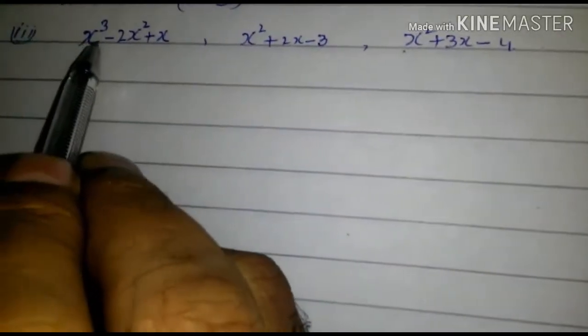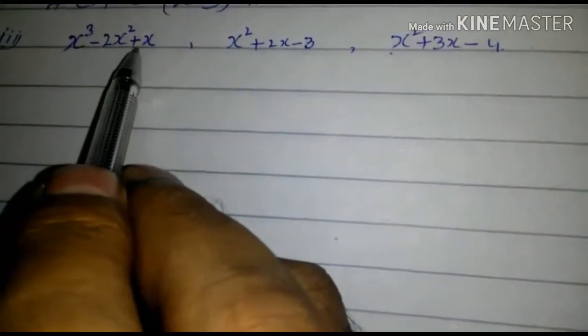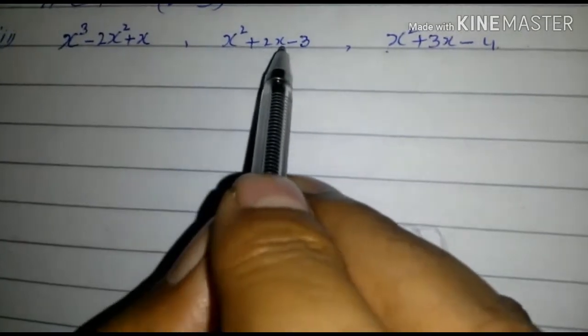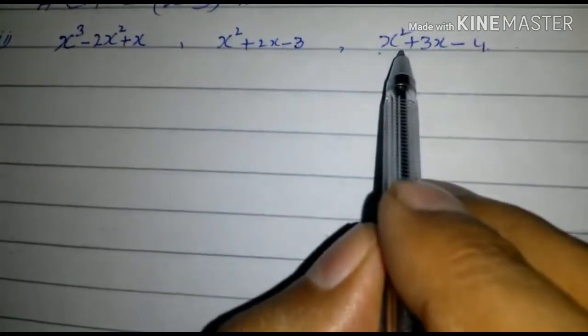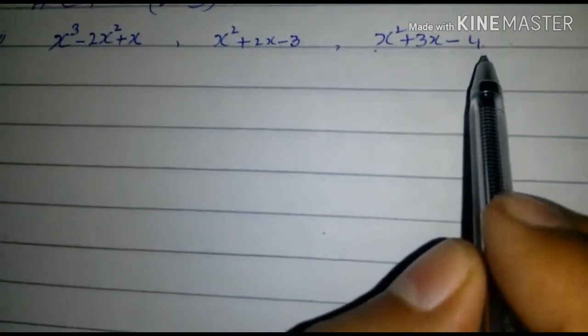Find HCF of x³ - 2x² + x, x² + 2x - 3, and x² + 3x - 4. Let's solve this. Consider the first of these.